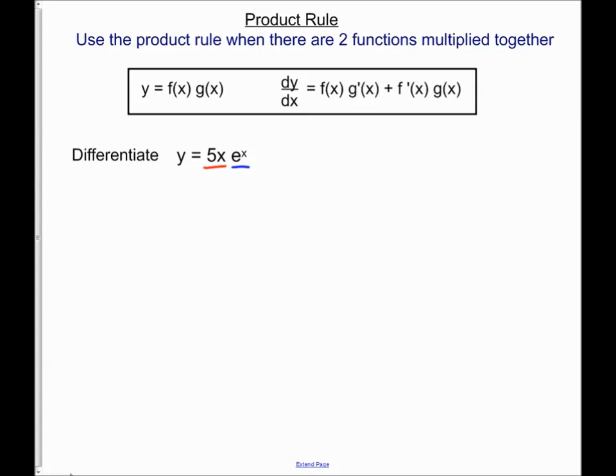And the product rule says if I've got my two functions I get f of x g dash of x plus f dash of x g of x. I'm going to call my 5x f of x and my e of x I'm going to call g of x.